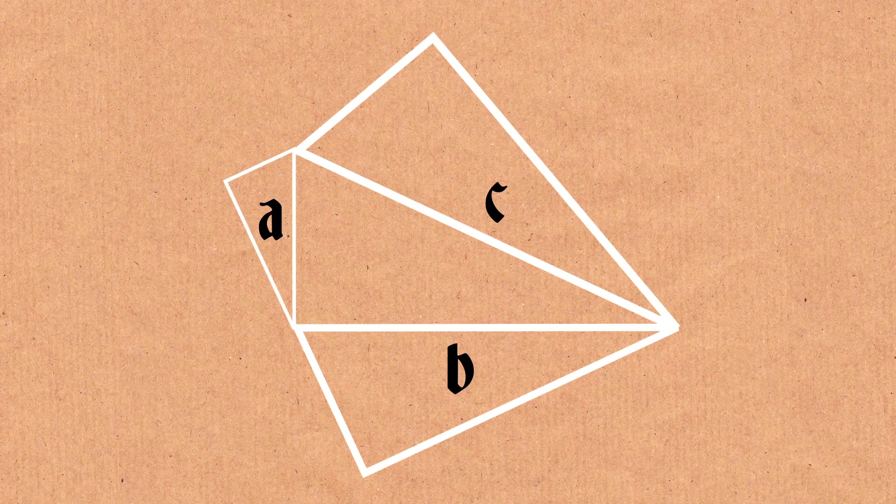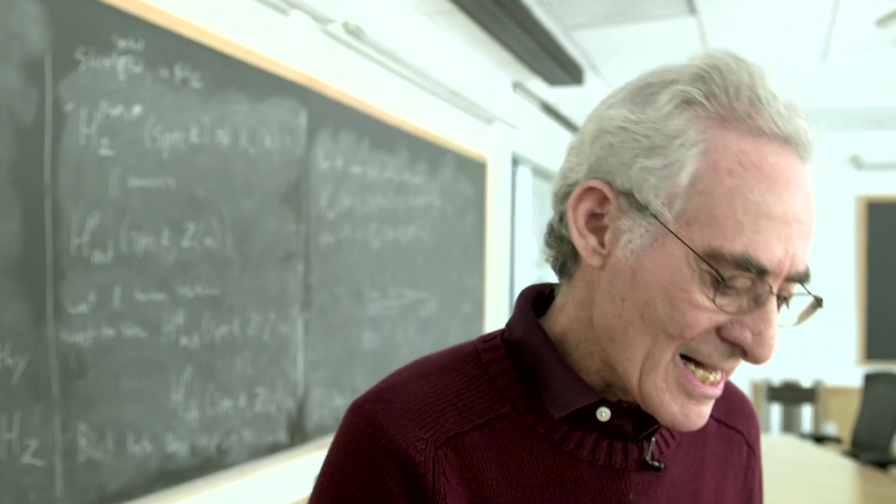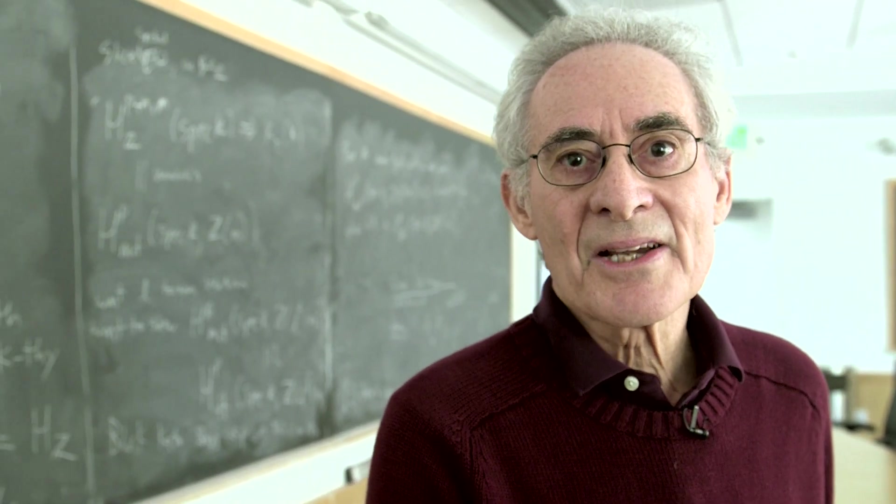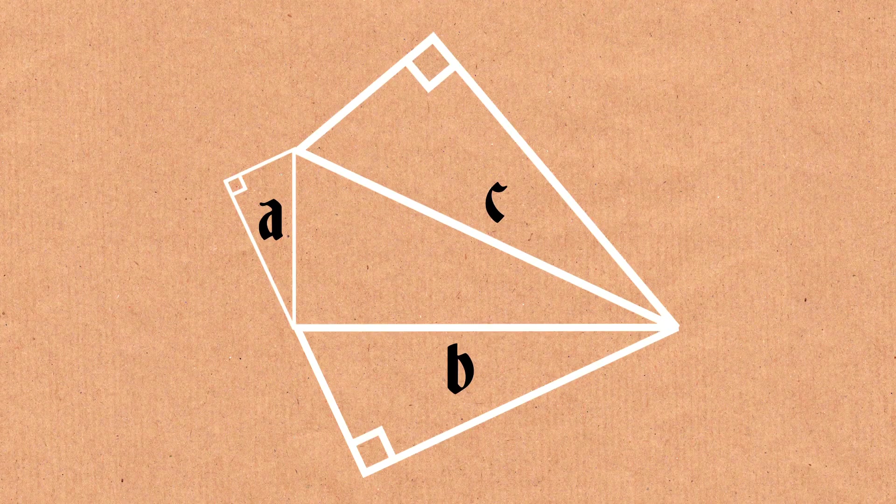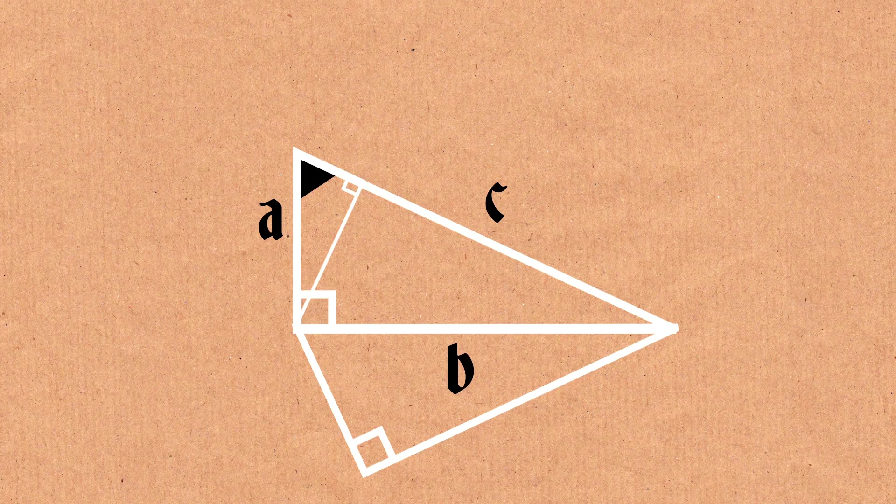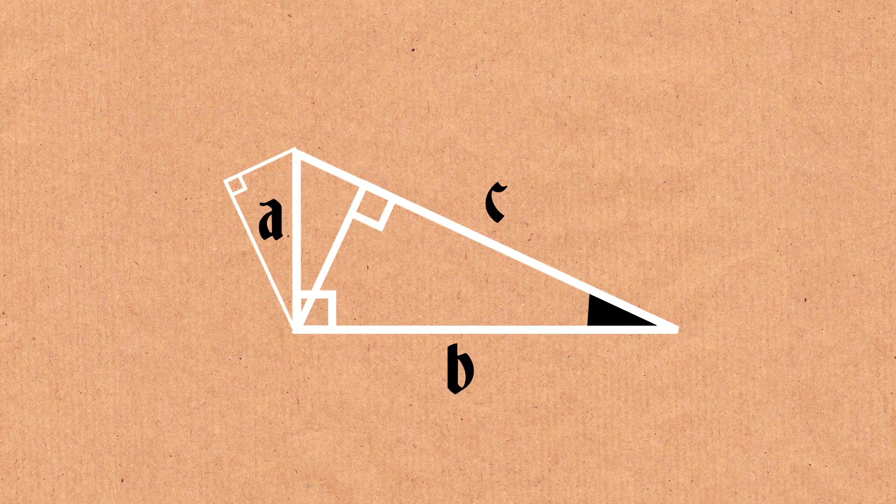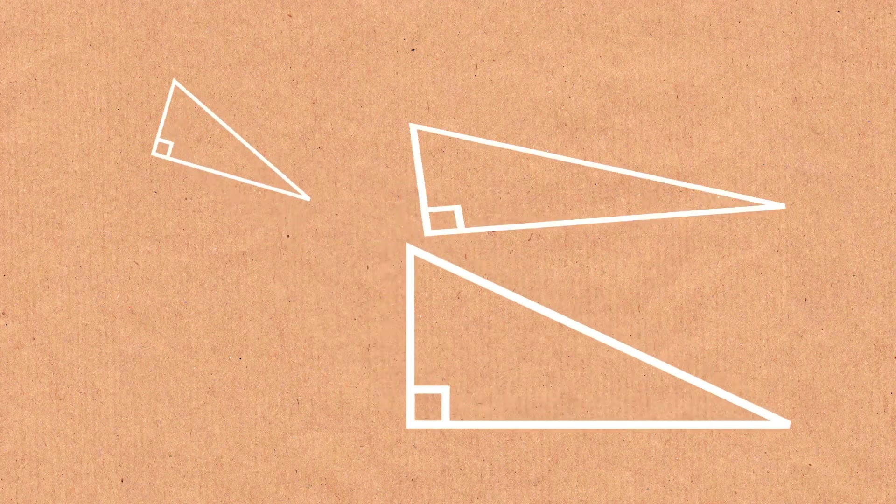All these triangles are right-angled triangles because one of their angles is a right angle. Each of these triangles have another angle in common. For example, this large triangle has this angle in common with this one, and it has this angle in common with this one. All three right-angled triangles are similar. So those are my three blobs.